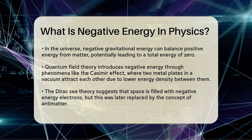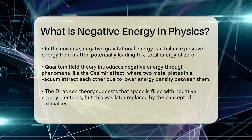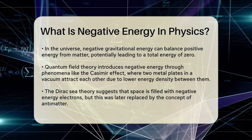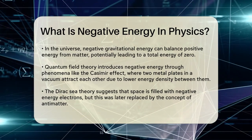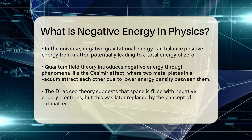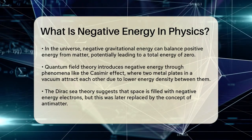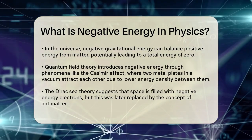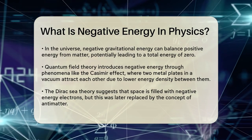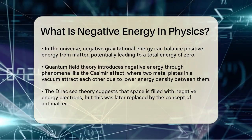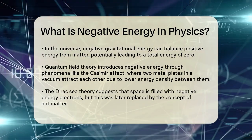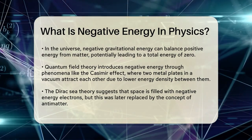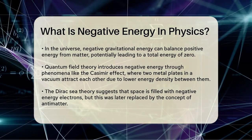Now let's dive into some quantum effects. In quantum field theory, negative energy can appear in several ways. One example is the Casimir effect. Imagine two very thin metal plates placed extremely close together in a vacuum. The space between these plates restricts the types of virtual particles that can exist there.